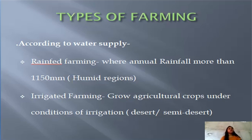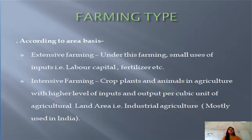In irrigated farming, agricultural crops are grown under conditions of irrigation, mainly in desert and semi-desert areas. According to area basis, there are two types: extensive farming and intensive farming. In extensive farming, there is small use of inputs like labor, capital, and fertilizer. In intensive farming, crop plants and animals are managed with higher levels of inputs and output per unit of agricultural land area, like industrial agriculture. Intensive farming is mostly used in India.